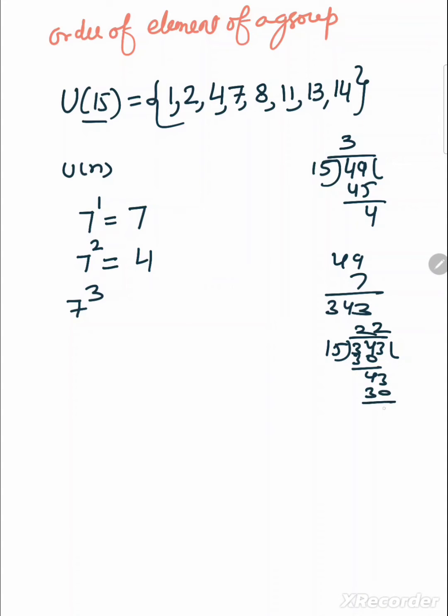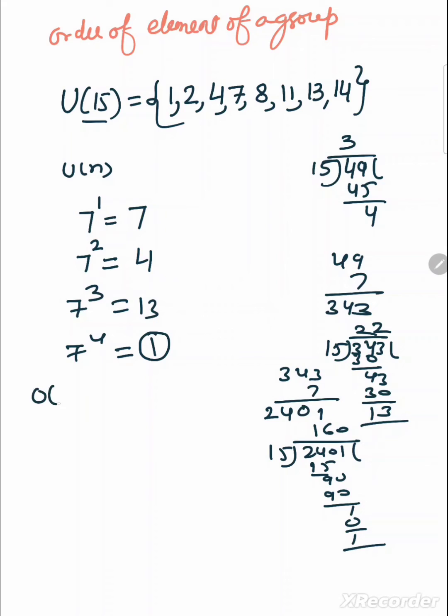7 raised to power 4: this is 343 into 7, 2401. Dividing by 15 modulo 15, we get 1. So here we get identity element. So order of 7 is 4.